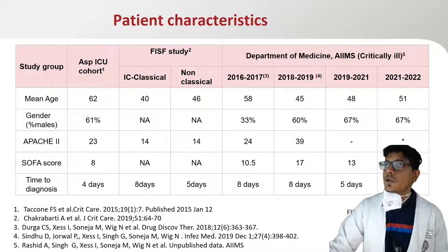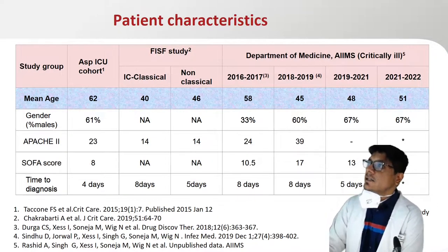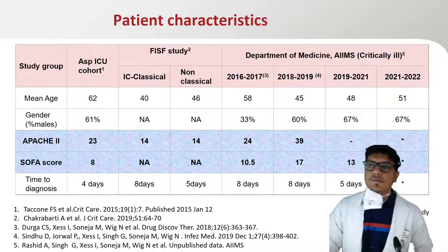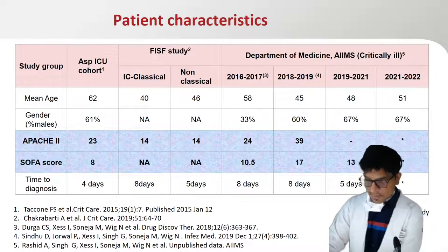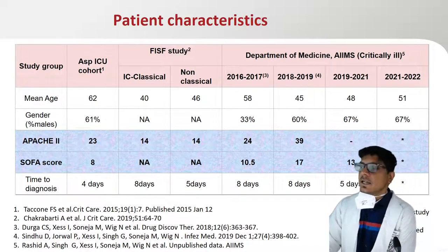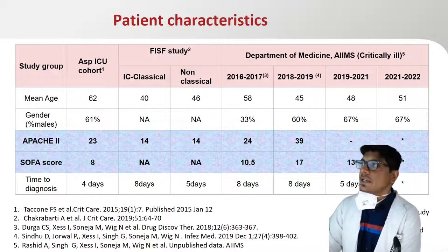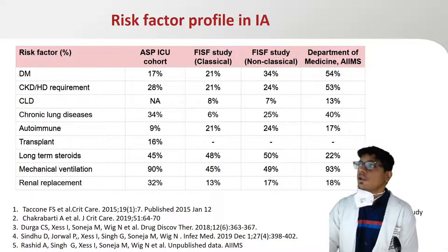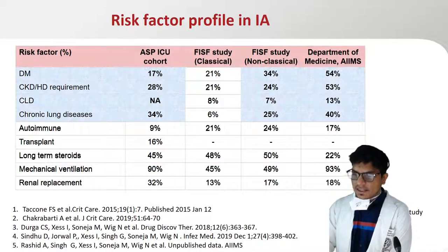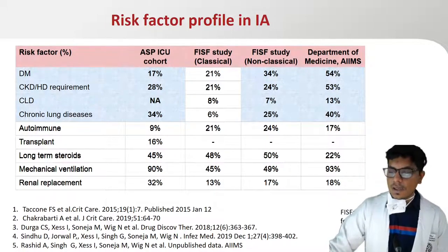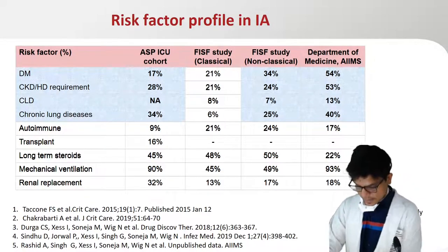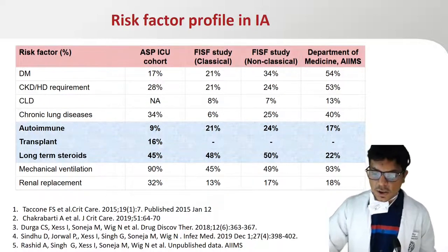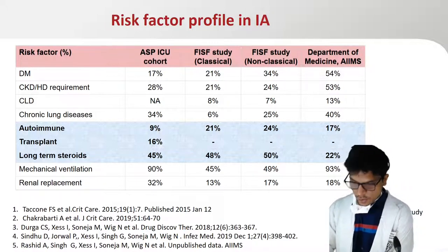Our patients are usually one decade younger compared to the ASPICU cohort. Like other cohorts, it is mostly males, but our patients are usually sicker at presentation with higher APACHE and SOFA scores. Mean time to diagnosis has improved with increased awareness, better biomarkers, and active surveillance. Most of our patients have multiple comorbidities — diabetes and CKD were more frequent compared to both the ASPICU and FISF cohorts. Classical risk factors such as transplant settings and long-term steroids were less common in our population.